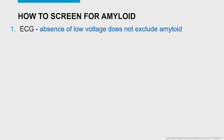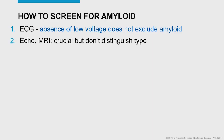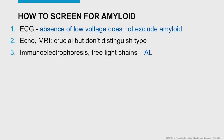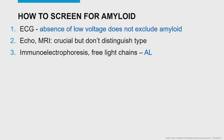Regarding screening for amyloid: ECG was traditionally taught, but absence of low voltage does not exclude amyloid — it's not as sensitive or specific as hoped. Echo and MRI are both very good at picking up amyloid — echo with strain imaging, MRI with late gadolinium enhancement. Unfortunately, neither can distinguish AL from TTR, wild type, or mutated forms. For AL amyloid, check free light chains, fat aspirate (used in almost all patients — about 80% of AL amyloid will be positive; about 15% of TTR amyloid will also be positive), and tissue typing for subtype.